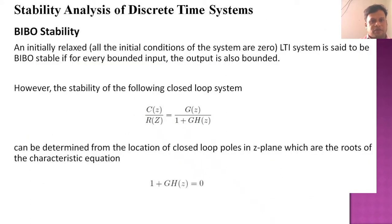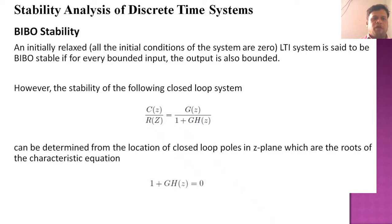Now we will talk about the stability analysis of discrete time systems. As we know, the stability of continuous time systems is classified by finding poles at the left of the s-plane. Similarly, we have stability analysis of discrete time systems for the z-plane, where rules are followed for the unit circle — the pole being inside, outside, or on the circle defines the stability of the system. With all initial conditions zero, the system is said to be BIBO stable — bounded input bounded output stable.